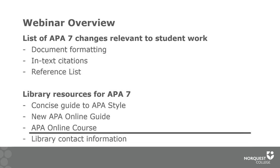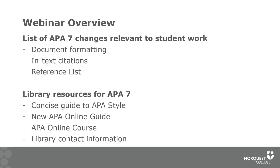Today we'll look at a list of changes relevant to student work as a result of APA 7. This includes changes to document formatting, in-text citations, and the reference list. We'll also look at library resources for APA 7, including the Concise Guide to APA Style, the new online APA guide, an APA online course, and library contact information for assistance with APA.